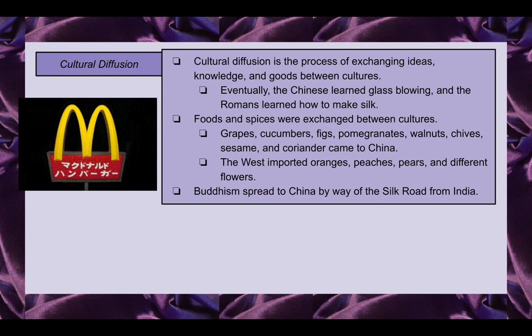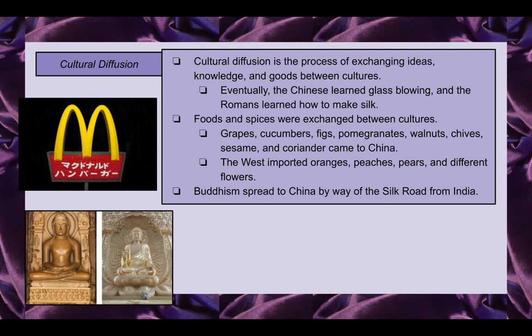The West was able to import oranges, peaches, pears, and different flowers from the East. When thinking of cultural diffusion and the Silk Road, Buddhism stands out — the spread of Buddhism from India to China. Travelers and missionaries spread their ideas, and people from China would then travel to India to obtain important texts from Buddhist temples and bring them back to their country for worship.